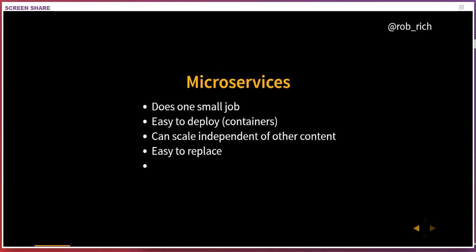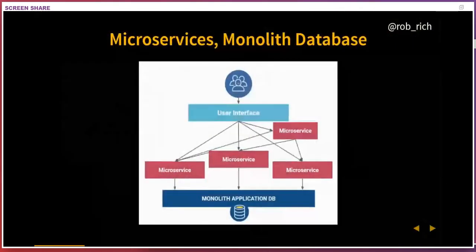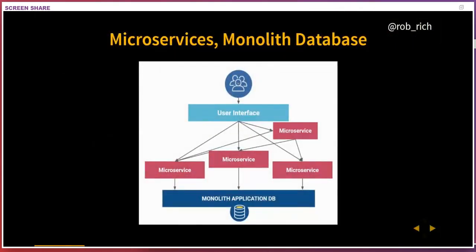One of the tenets of microservices is that it should own its own data. But usually when we're doing microservices, we end up with all our microservices doing all the things, our application is well-architected, but it's using one big monolithic data store. So refactoring our monolith into microservices worked out really well — but then why do we default back to our monolith database?